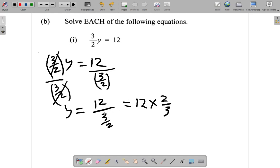So 12 divided by 3 over 2 becomes 12 multiplied by 2 over 3. What you have here: 3 into 3 is 1, 3 into 12 goes 4, 4 twos is 8.